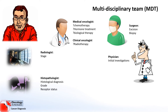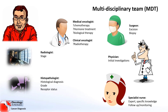We also have surgeons — the people who will cut out tumours, or who can assist with biopsy procedures when tumour tissue is particularly hard to get hold of. Last but not least, we have specialist nurses. Specialist nurses tend to have expert specific knowledge in particular areas of cancer, such as lung cancer or GI cancer. They are involved heavily in the follow-up and monitoring of patients, and they're often the people who actually know the most about the patients themselves.